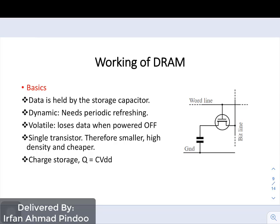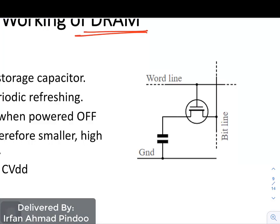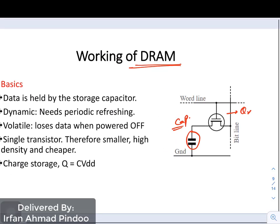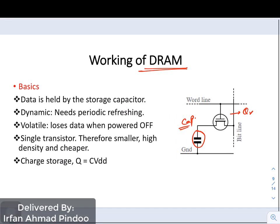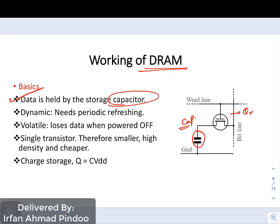Welcome back students. After finishing SRAM, let us start with the working of DRAM. In DRAM we have only one transistor and one capacitor, while in SRAM we had six transistors. The data is held by the capacitor, and the reason why it is called dynamic RAM is because periodic refreshing is done.